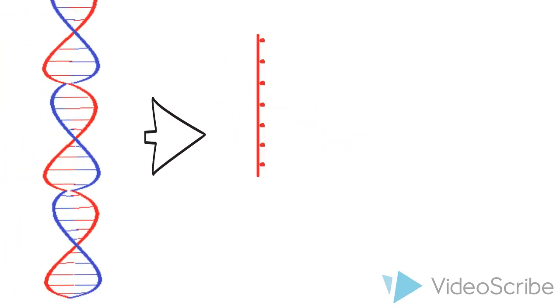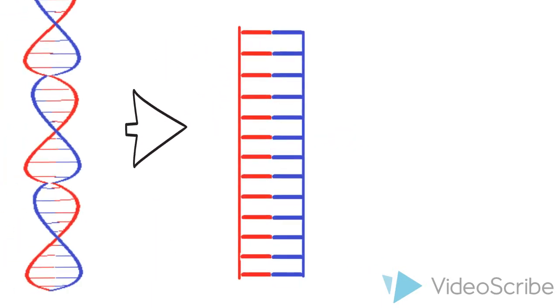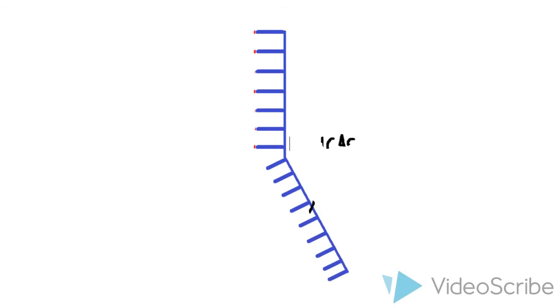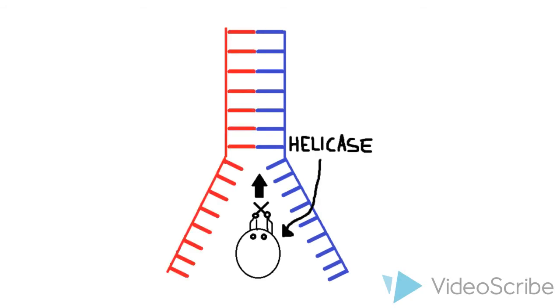In order for DNA replication to occur, the DNA is first unwound. And these strands are separated, much like you unzip a zipper, by an enzyme called helicase.